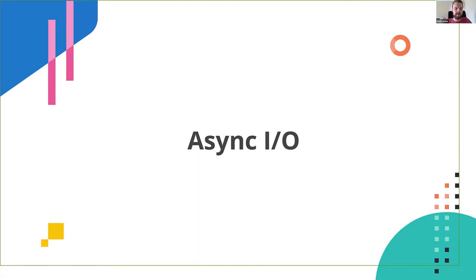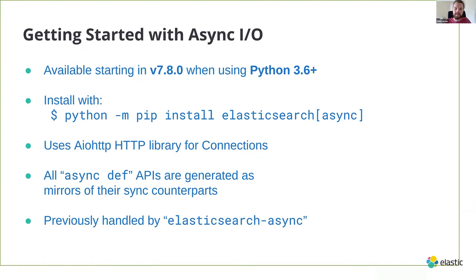Let's talk about a relatively new feature that came out in version 7.8 of the client: async IO. If you're running on Python 3.6 and using Elasticsearch client library 7.8.0, this works for any Elasticsearch 7 cluster. You can install the extra with square brackets async — that will install aiohttp alongside the package. It makes an additional interface available called AsyncElasticsearch, which uses aiohttp instead of a synchronous client like urllib3 or requests. All APIs will be native coroutines with async def.